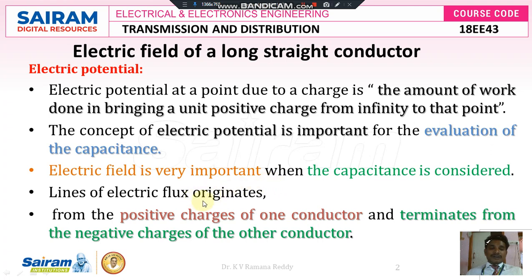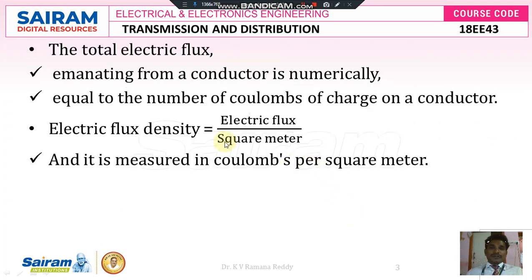The lines of electric flux originate from the positive charges of one conductor and terminate at the negative charges of the other conductor. That means charge always flows from the positive terminal to the negative terminal, because current flows in a closed circuit from higher potential to lower potential. In this case also, the positive charges of one conductor terminate at the negative charges of the other conductor.